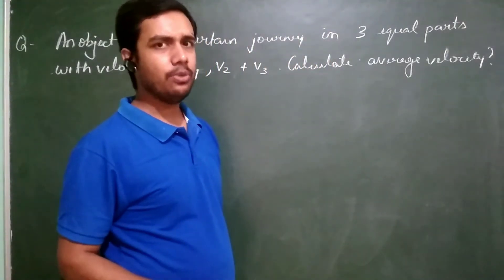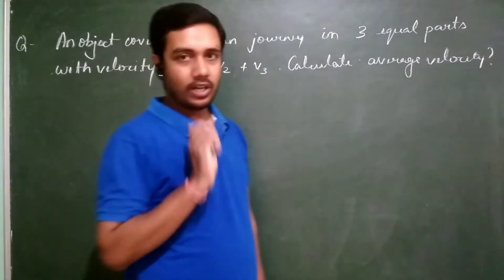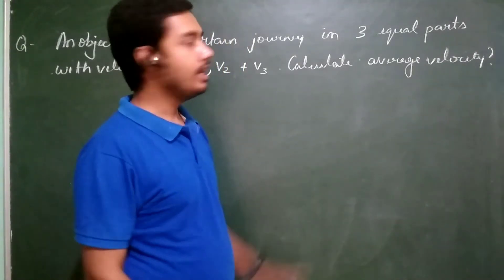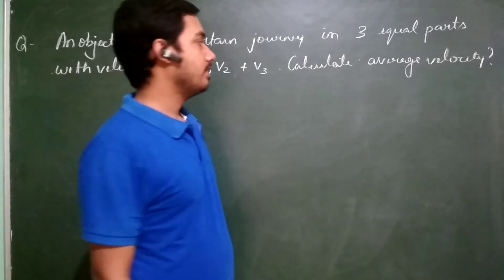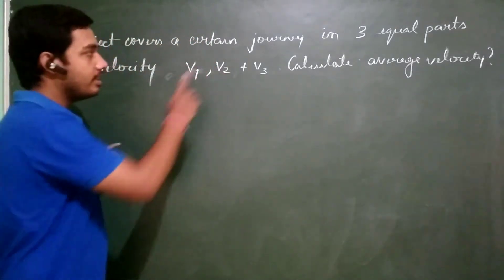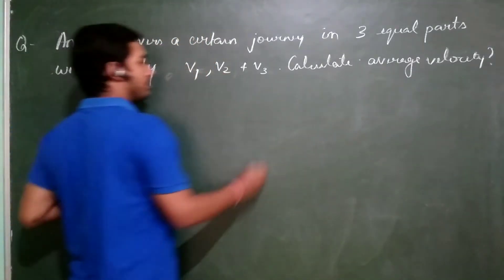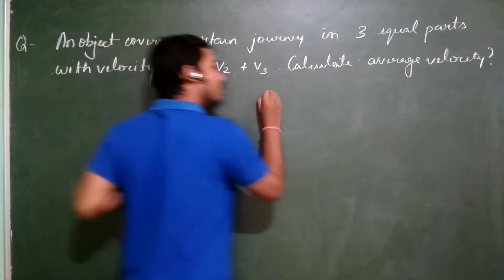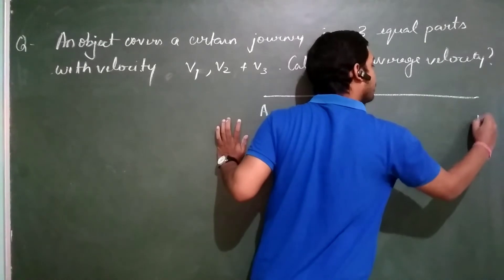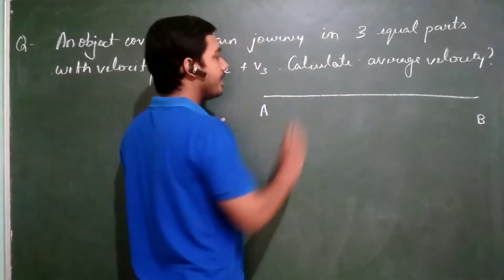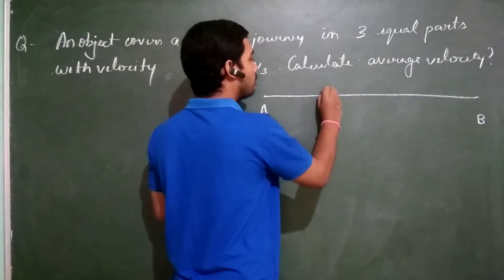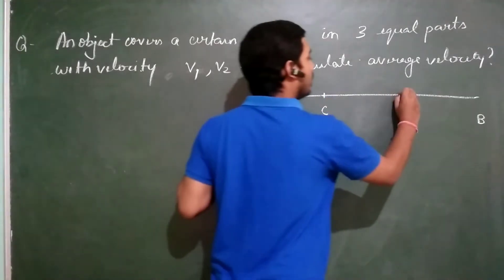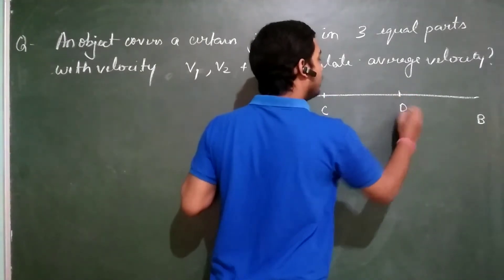Now this question is homework for you. I will only give you a hint how to do the question and you have to tell me the answer. The journey is completed in 3 equal parts, suppose this is point A and this is point B divided into 3 equal half, suppose this is a point C and this is a point D.